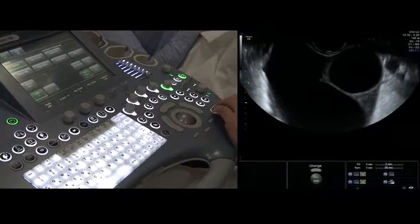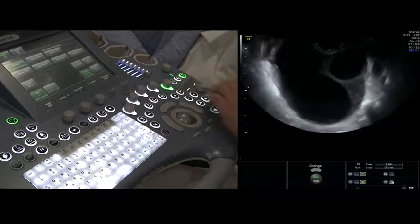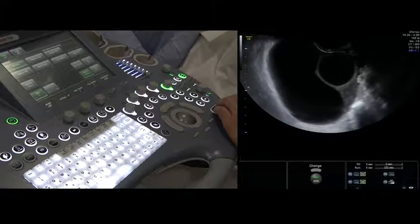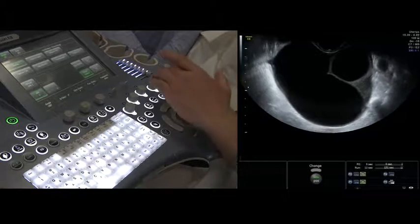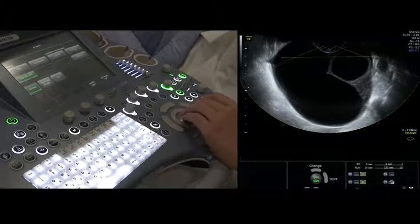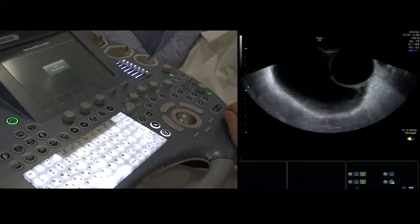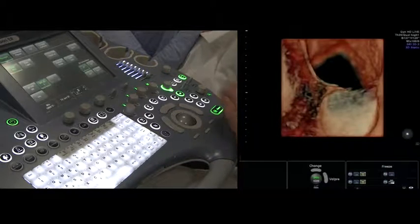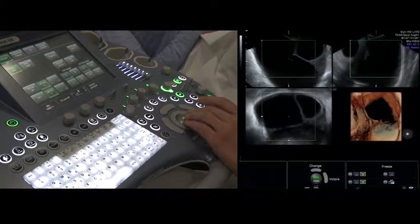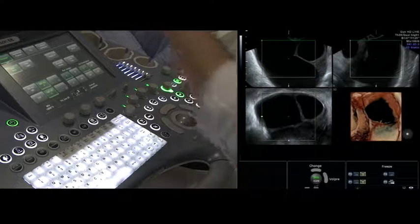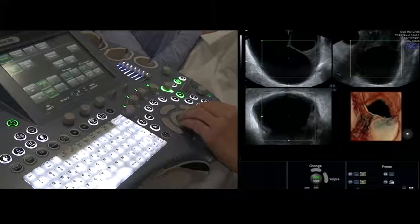After this we can do 3D assessment of the cyst. We first take the whole cyst in the right region, switch on 3D, push the freeze button, and then collect the volume of the whole cyst. With the split screen we can see the different planes: the A plane, the B plane, C plane, and the rendered image. This is HD live.